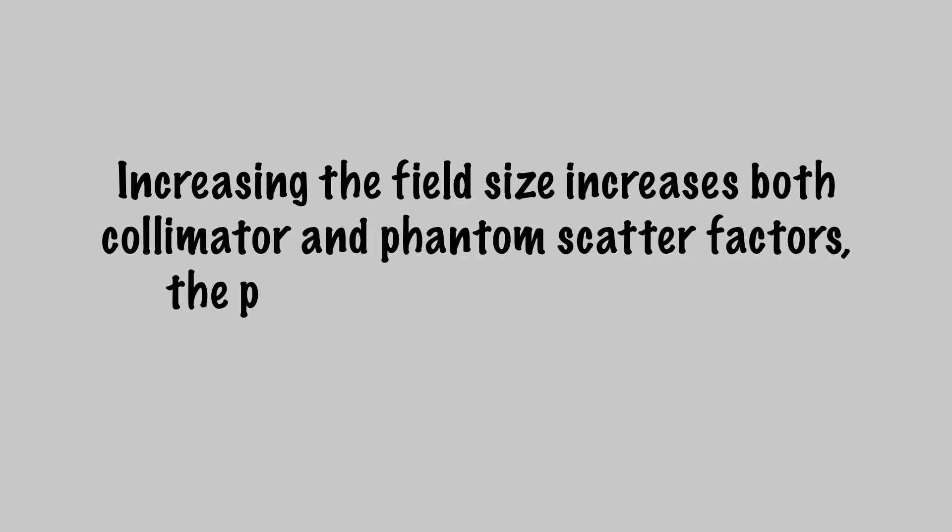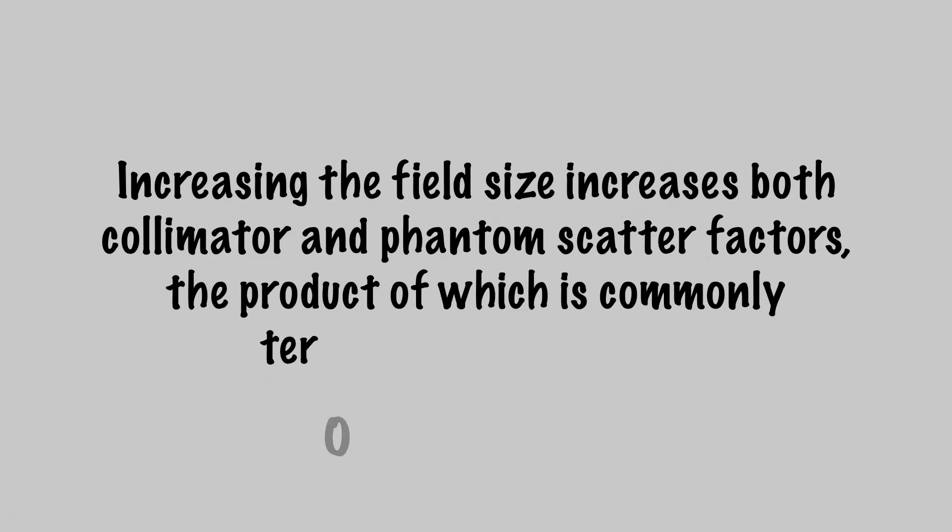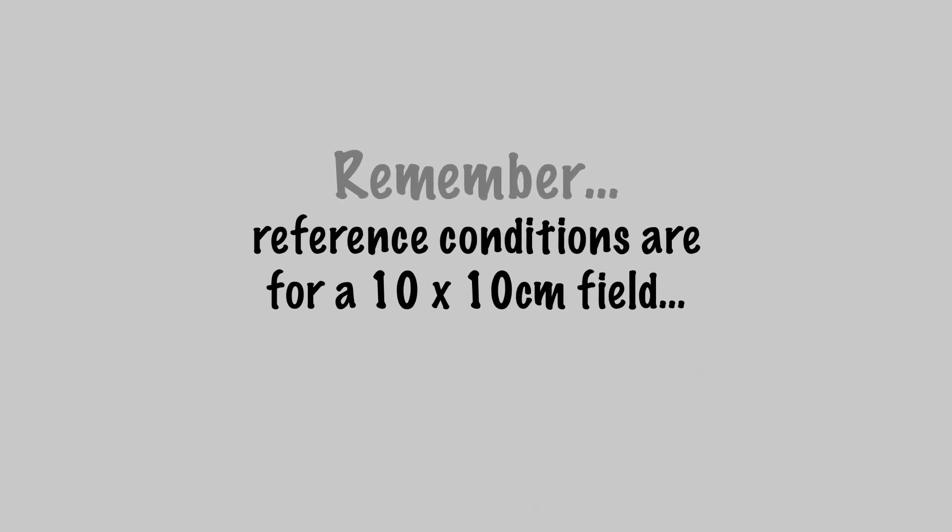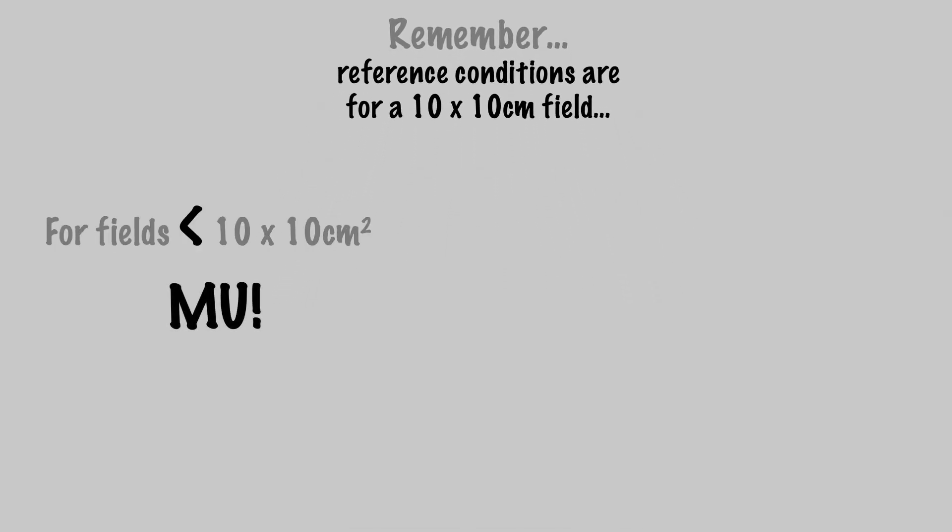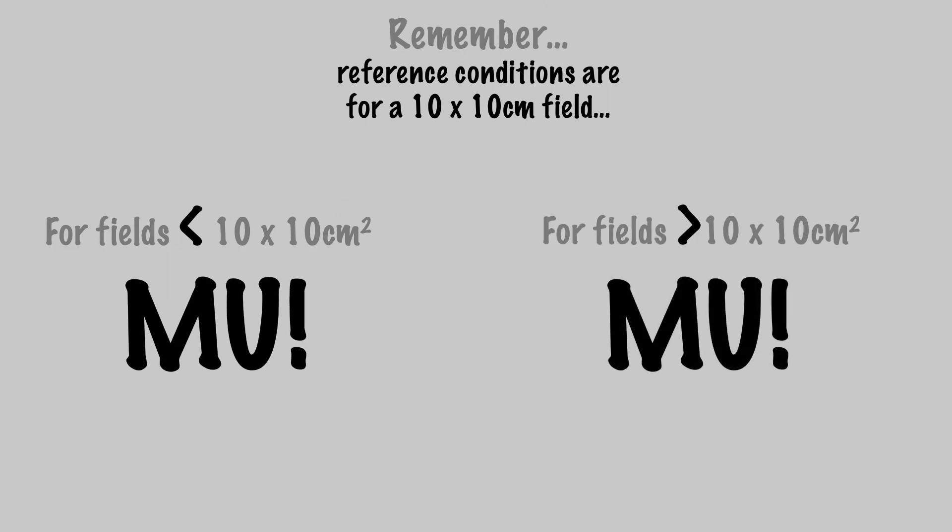Increasing field size increases both collimator and phantom scatter factors, the product of which is commonly termed output factor. Since reference conditions are for a 10 by 10 centimeter field, we have to make adjustments for output factor when using larger or smaller field sizes. For fields smaller than 10 by 10, there will be less scatter, and more MUs required. For larger field sizes, there will be more scatter, and less MUs required.